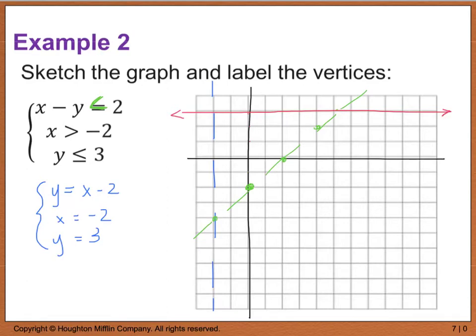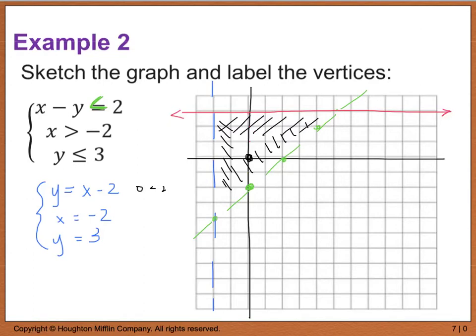Now I have to find where to shade. I can use test point (0, 0) since it doesn't fall on any of the lines. Plugging in: 0 is less than 2 — true, so I shade on this side of the green line. Then 0 is greater than negative 2 — true, so I shade on this side. And 0 is less than or equal to 3 — true, so I shade in this direction. The common overlapping region is the triangular area.